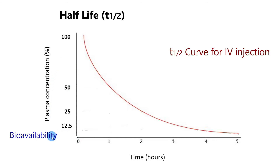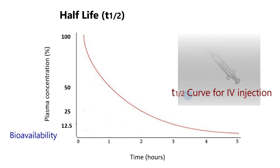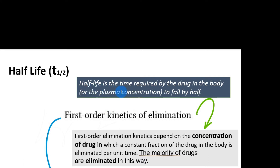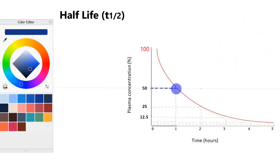Bioavailability is the fraction of the drug that reaches the plasma in an unchanged form. In this example, the drug is given by IV bolus — a direct IV injection — which means plasma concentration increases very rapidly. If 100 mg of a drug is given by IV injection, we assume 100% of the drug reaches the plasma. Half-life is the time required for that plasma concentration to fall by half.